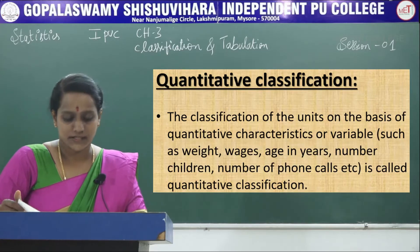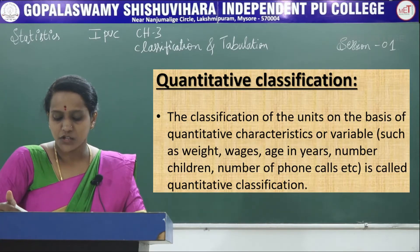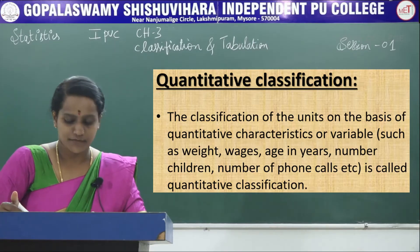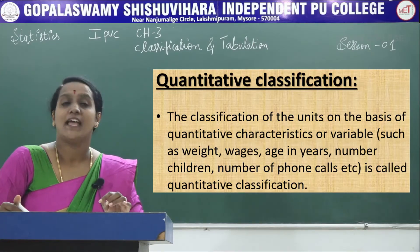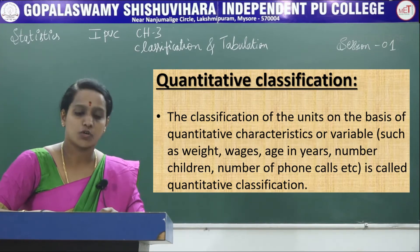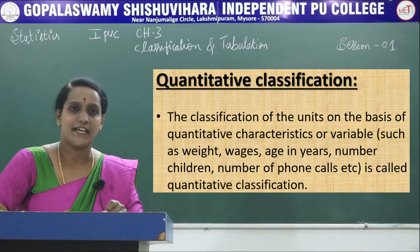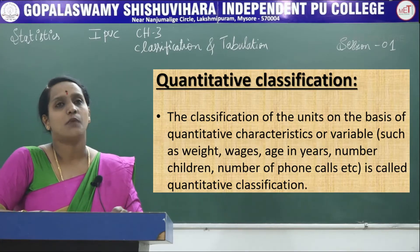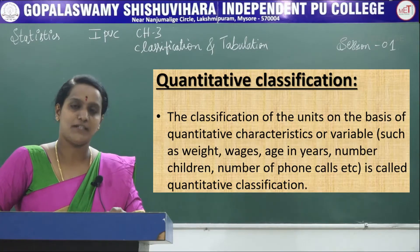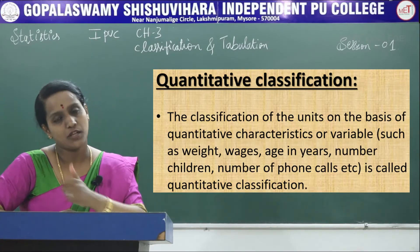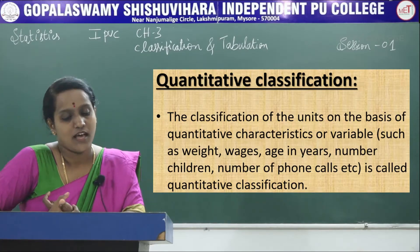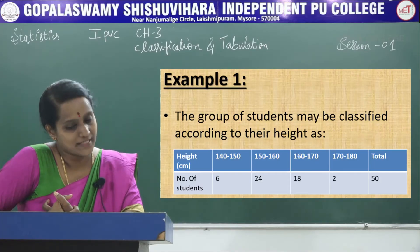Next, quantitative classification. The classification of units on the basis of quantitative characteristics or variables — such as height, weight, wages, age in years, number of children, number of phone calls, number of births, number of deaths, etc. — is called quantitative classification. Based on quantity, numbers, or variables, if we do the classification, that is called quantitative classification.